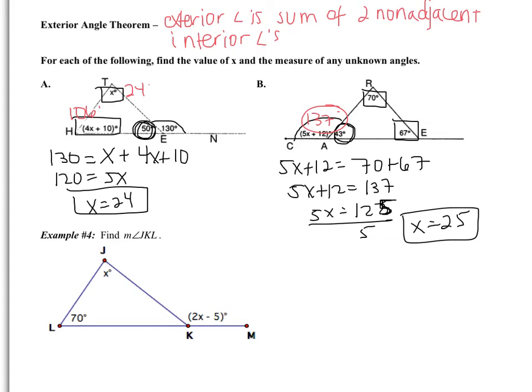Substituting back: 5(25) + 12 = 137 degrees. Now pause the video and try Example 4 on your own. You should have gotten x = 75. If not, go back and find your mistake. If you can't find it, we will answer any questions in class.